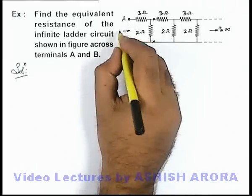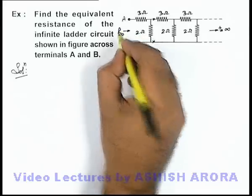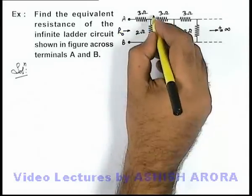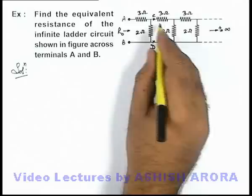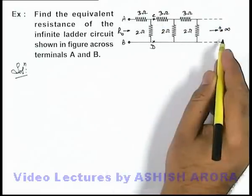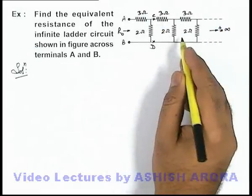Because if we consider the resistance across terminals A and B is R_not, then we can say across terminals C and D also, the total resistance for these infinite sections will also be R_not.